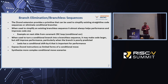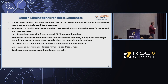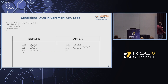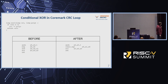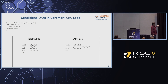Zicond is an extension that got ratified earlier this year. You can think of it as conditional zero. You can use it to speed up existing branchless sequences and also to eliminate branches in your code. This is a piece of the CRC loop from CoreMark — just the conditional XOR. The left-hand side shows what we're doing before: a branchless sequence. But with the Zicond extension, you can squeeze one instruction out of there, and it's worth a couple of percent on the actual benchmark in terms of real performance.